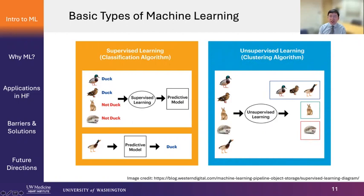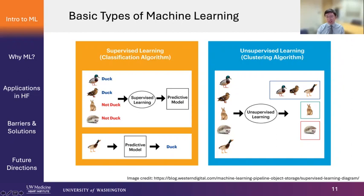The other basic type is called unsupervised learning, often used for clustering and finding patterns in data. In this case, you only have the raw data without the labels — you have five pictures of animals but don't know which animal is which. What unsupervised machine learning algorithms do is find patterns in the data and put them into different clusters based on how similar they are. The machine does not know what the animals are, but it knows they are basically different groups. That's mostly for finding hidden patterns in data.